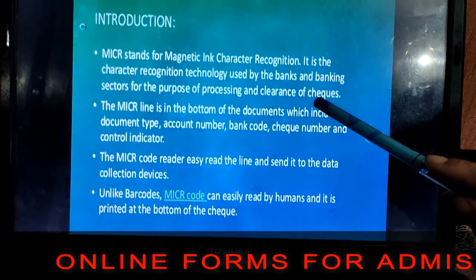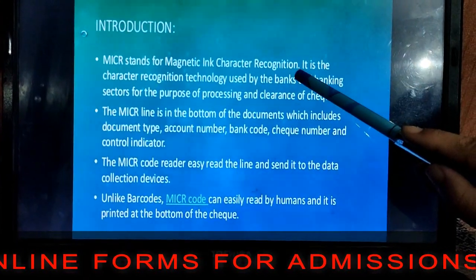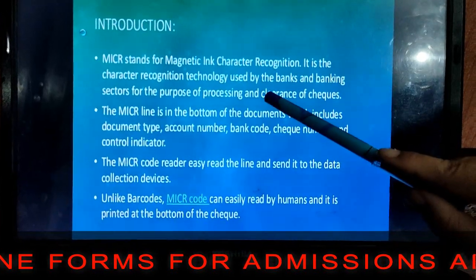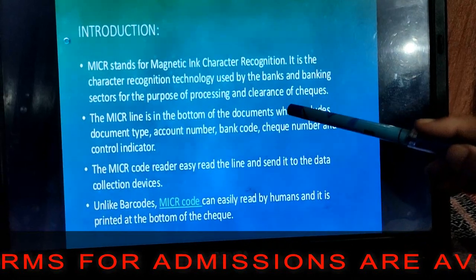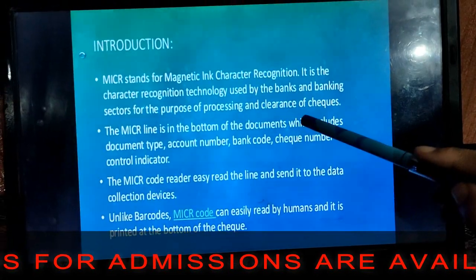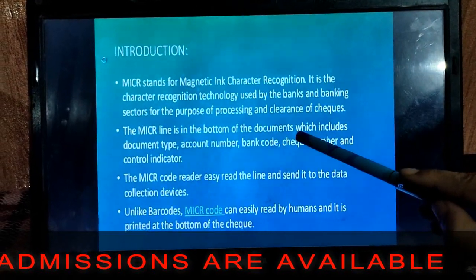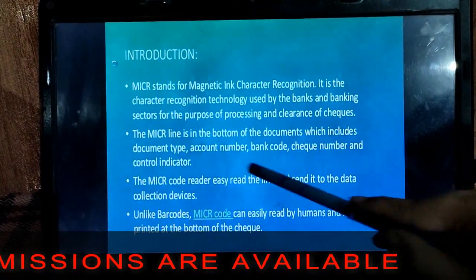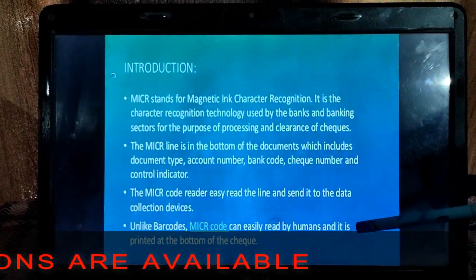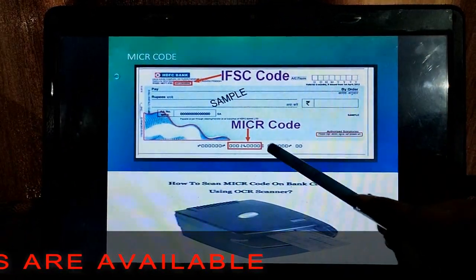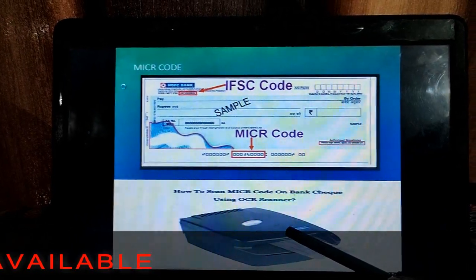Next is MICR — Magnetic Ink Character Recognition. It is the character recognition technology used by banks and other sectors for processing and clearance of checks. It is used to scan documents which contain account numbers, bank codes, check numbers, etc. This is the MICR code which is scanned by MICR.